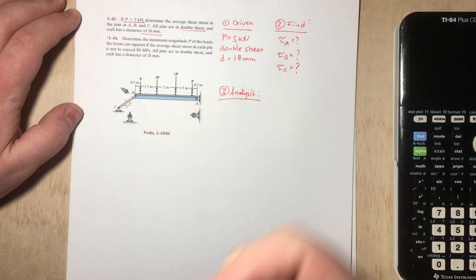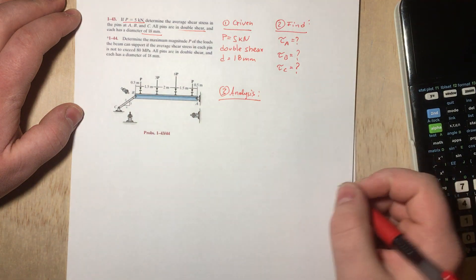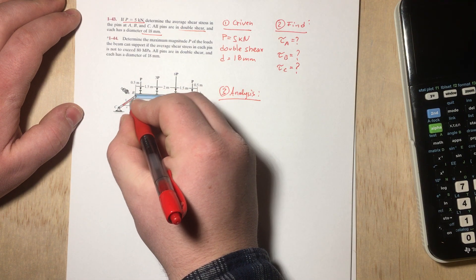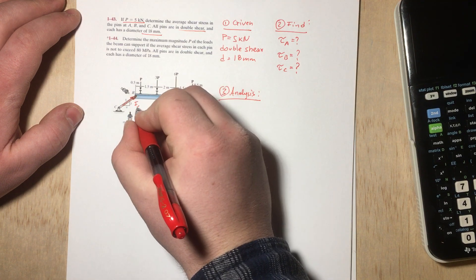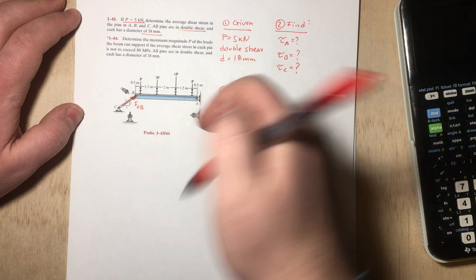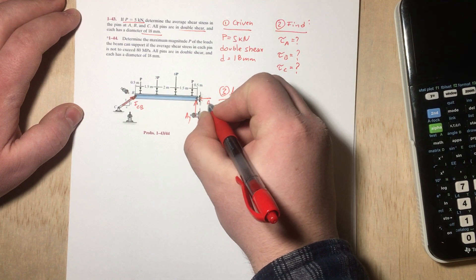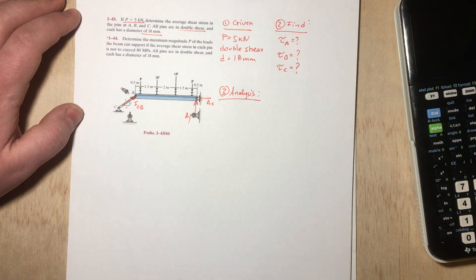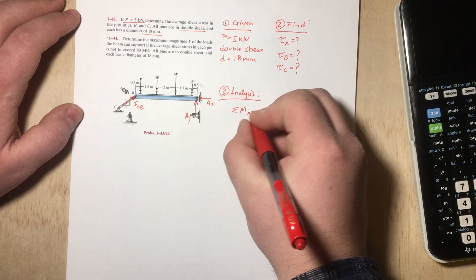Any time you have a mechanics of materials problem, you always need to do your statics first. So let's figure out what our reaction forces are going to be in this diagram. We know we're going to have a force FCB pushing upwards with a 3-4-5 triangle, a force AY going upwards, and a force in the AX direction. I'd like to find AY, AX, and FCB.